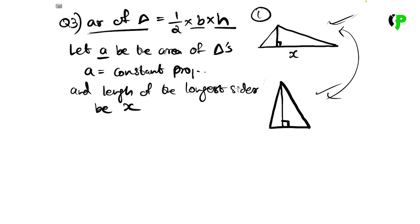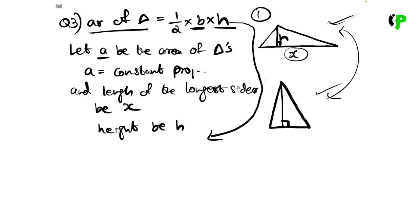If we write the area, we will write the base. We will write the longest side — the long side as the base. Then we will write the long side and the height. So: A is equal to half into base. We are the longest side, x. So x into height is H.